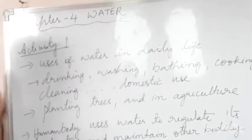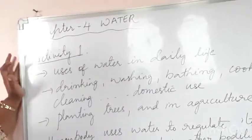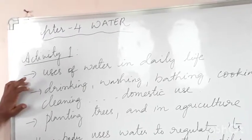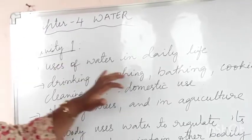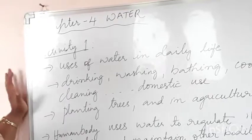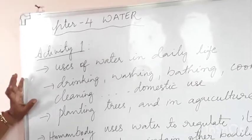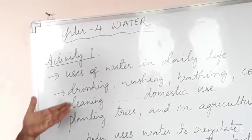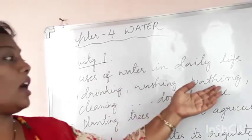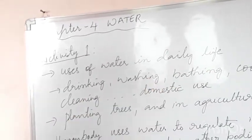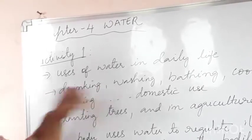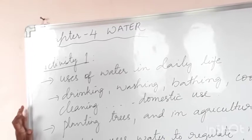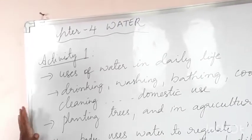Now let us do an activity about water. Water is used in our daily life and without water we cannot survive. What are the things that we do with water? Drinking, washing, bathing, cooking, cleaning, and so on. All these activities come under domestic use. Apart from domestic use, we also plant trees, and if we have any pets at home, we feed them with water. In agriculture, growing different kinds of crops also requires water.